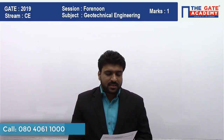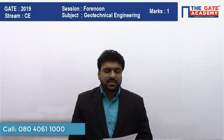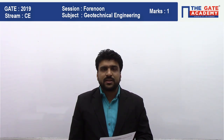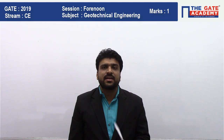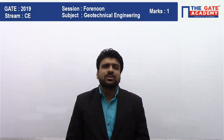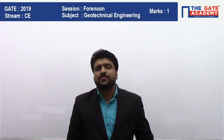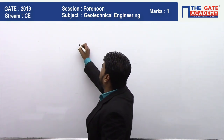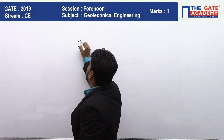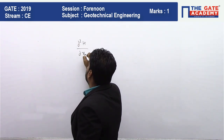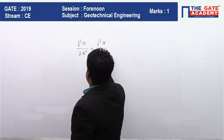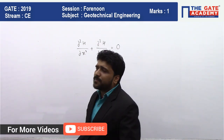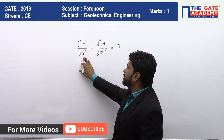In this question they have asked from the seepage analysis: what is the Laplace equation for an isotropic soil medium if the flow is in the x and z direction and head is h? We know the Laplace equation — it is a very basic formula. The Laplace equation is: ∂²h/∂x² + ∂²h/∂z² = 0.